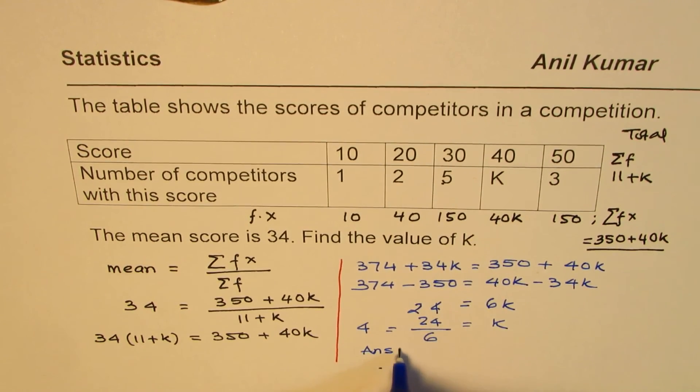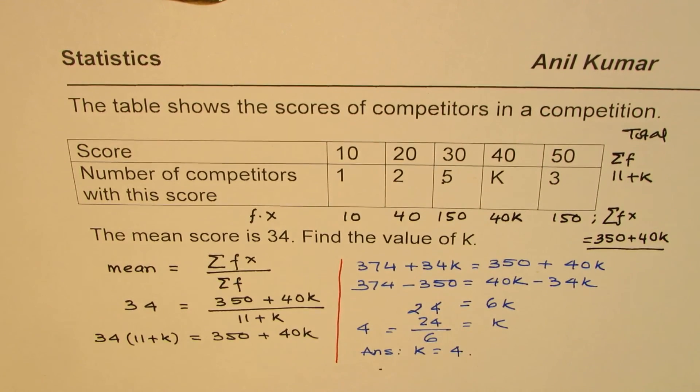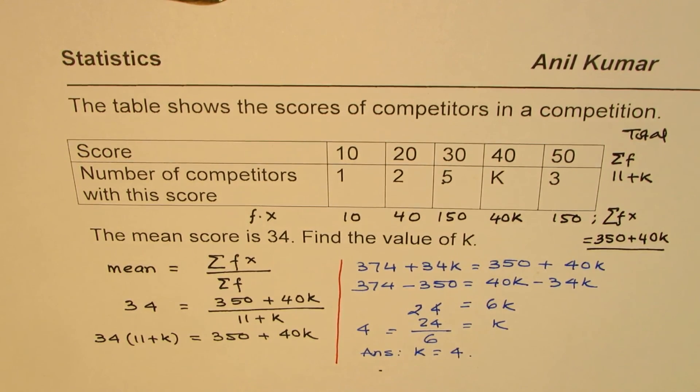So our answer is that K is equals to 4. So that is how you can use frequency table to find the unknowns. I'm Anil Kumar and I hope that helps. Thank you and all the best.